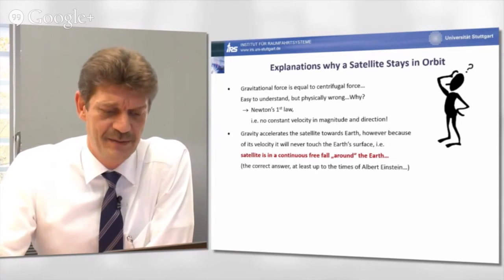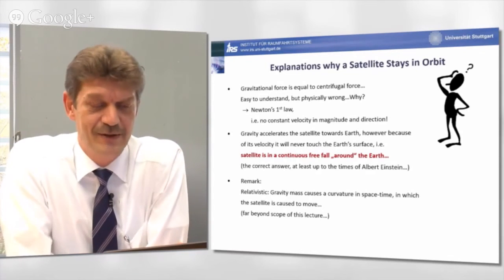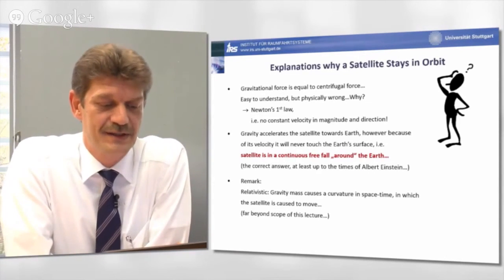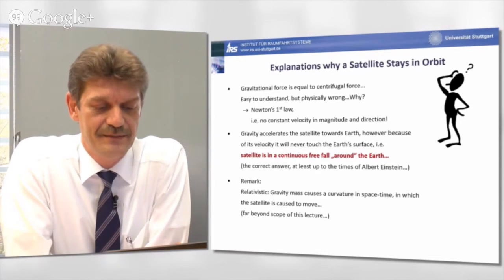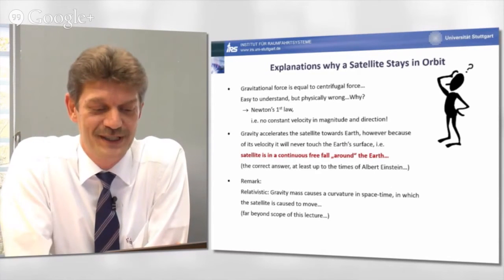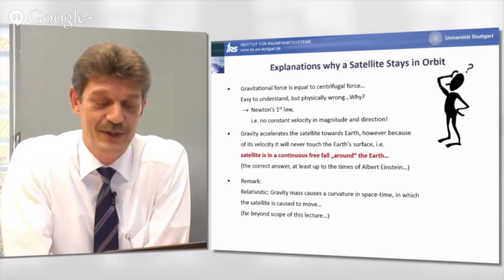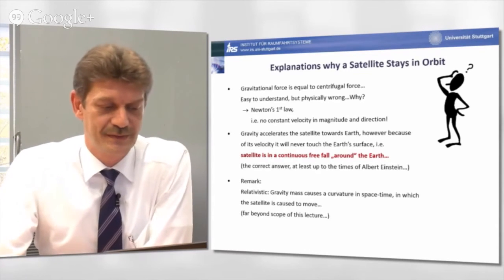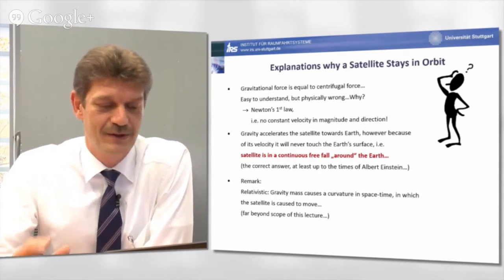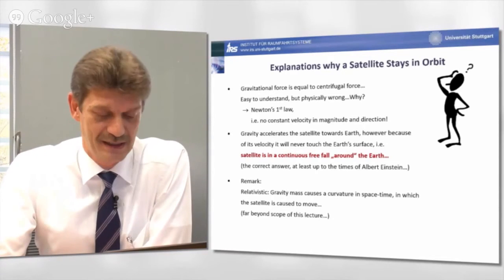Albert Einstein was able to explain also the gravitational mass or the gravitational force is nothing else than a pseudo-force, which means the gravity mass causes a curvature in space-time in which the satellite is caused to move. However, this is far beyond the scope of this lecture. I will concentrate on the Newtonian world in the next.